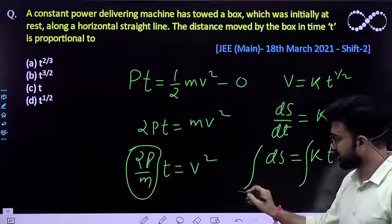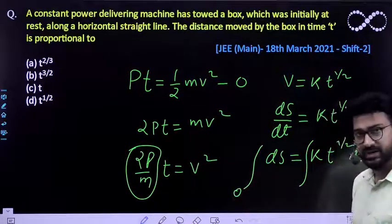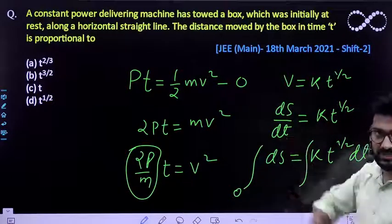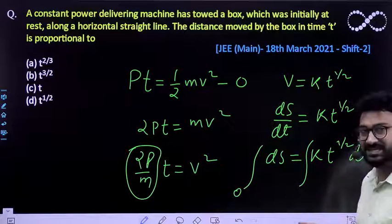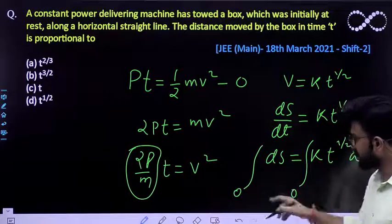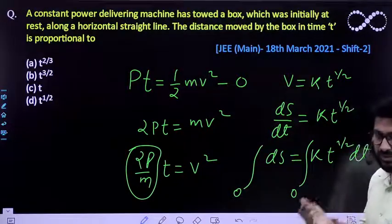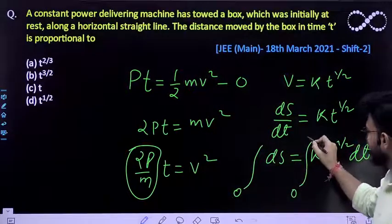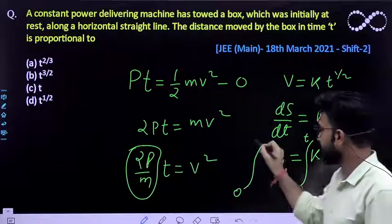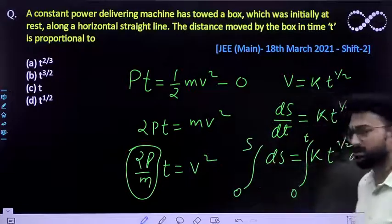At t equals 0 seconds, the displacement was 0. Although they haven't mentioned from which position it started, but we'll assume that at t equals 0 seconds, 0 seconds, its displacement was at the origin, it started from there. At t equals certain time t, its displacement, let it be s, its displacement will be s.